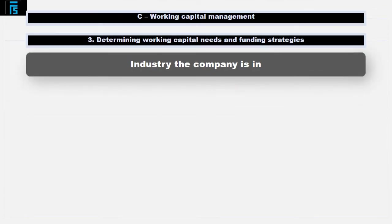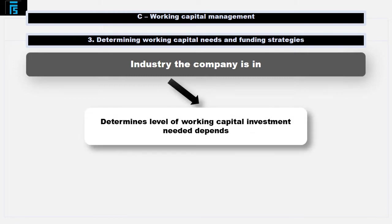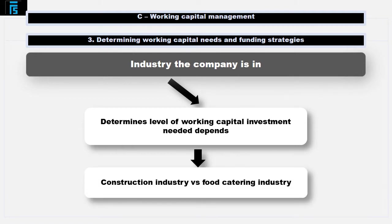The industry the company is in also affects the level of working capital investment needed. Going back to our construction company example, they may take years to get the sales from their customers. Compare this to a coffee shop — they are paid immediately by their customers and they can reduce their inventory investment by careful management.